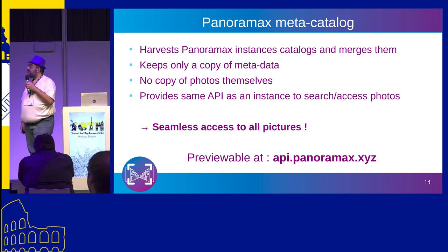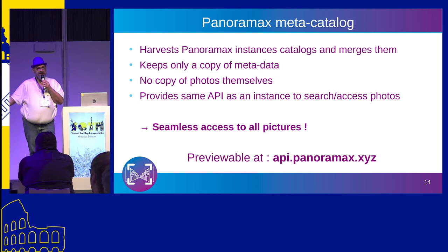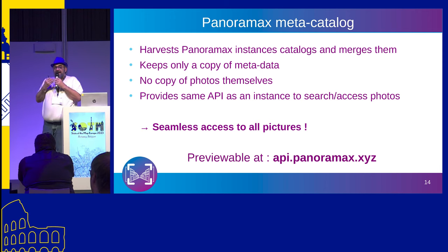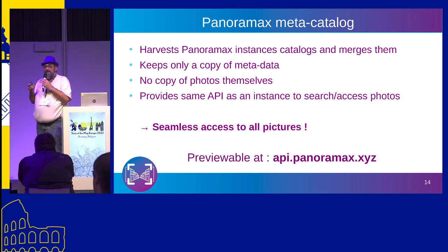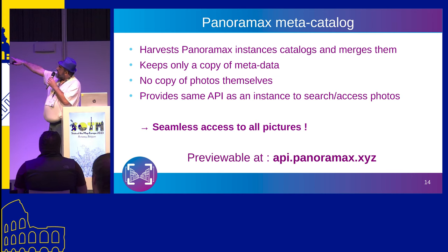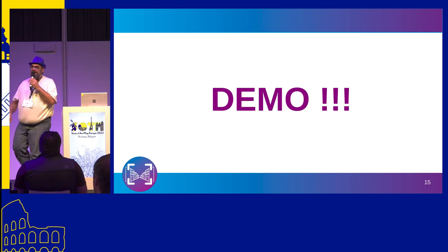The meta catalog is a separate service that harvests the catalog of all listed instances and exposes it. It copies only the metadata, not the pictures — because storage would be another problem — and it provides exactly the same API to search and access pictures. The goal is to have a seamless experience when browsing through the meta catalog. You can see it at api.panoramax.xyz.